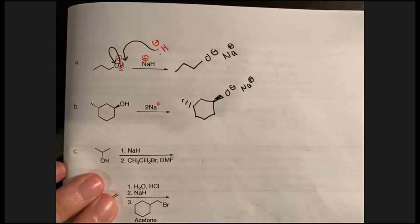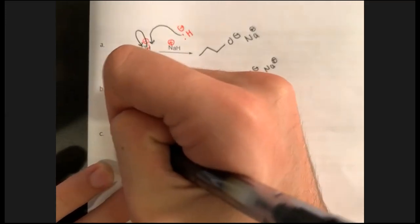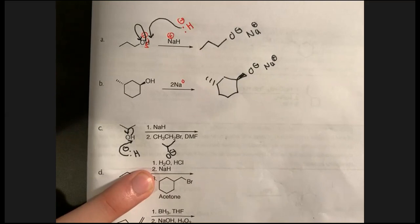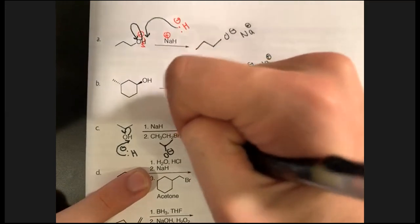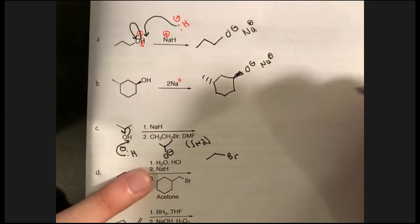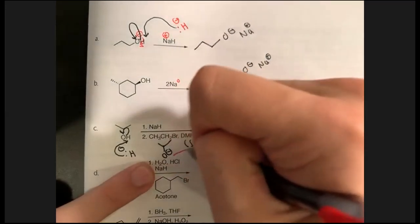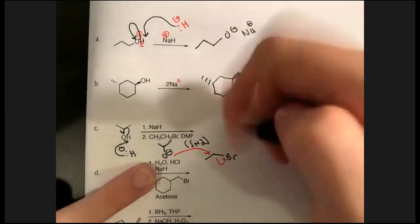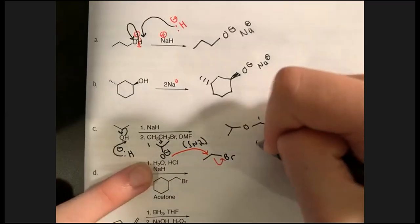In letter C, step one is sodium hydride removing that proton to form the alkoxide intermediate. Then that alkoxide intermediate can do an SN2 reaction with the reagent in step two. I know it's SN2 because of the DMF solvent — a polar aprotic clue — and also because the ethyl bromide is a primary alkyl halide: strong nucleophile, aprotic conditions, SN2.